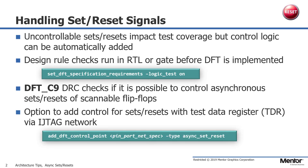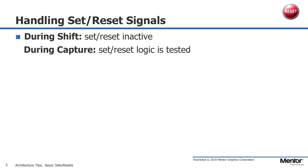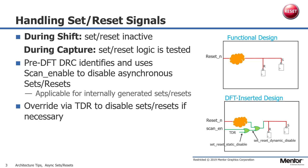Sometimes the asynchronous sets or resets need to be disabled during test. Tessent automatically inserts control logic, and the user has the option to override these sets or resets with a test data register TDR that can be controlled via the IEEE 1687 network. The asynchronous sets or resets need to be disabled during shift, and during capture the asynchronous sets or resets need to be tested. Pre-DFT DRC identifies such an asynchronous set or reset and uses the scan enable to disable them during shift.